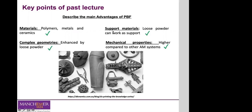When building parts using polymers, support structures are not needed because the loose powder can support the part being printed. However, that is not the case with metals — support structures are required, which removes that advantage. Similar to binder jetting, the loose powder allows very complex geometries to be created without support structures for polymer parts. The range of materials is also much broader than in SLA or binder jetting.